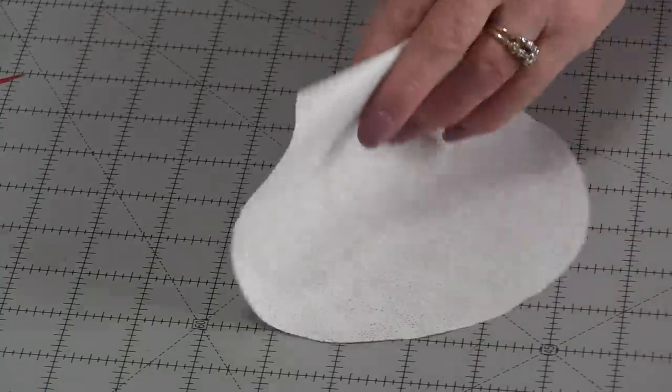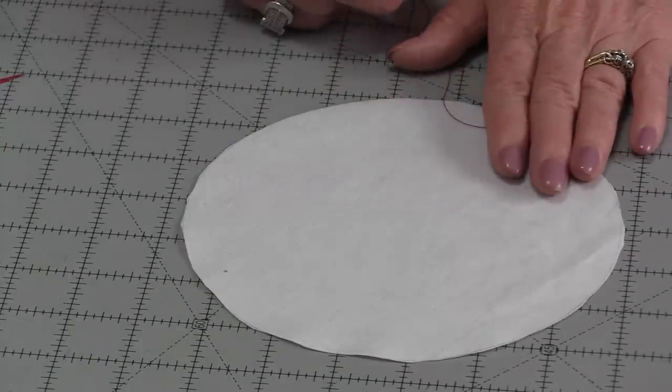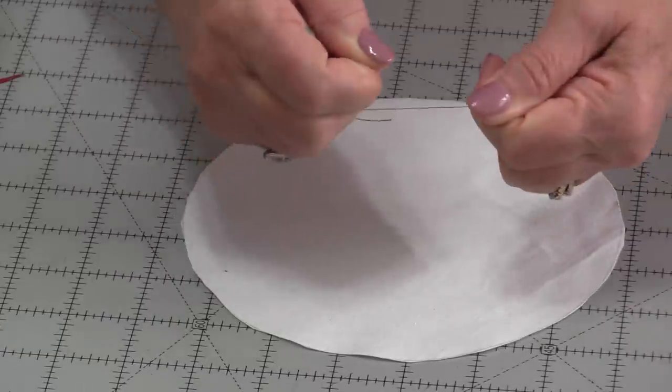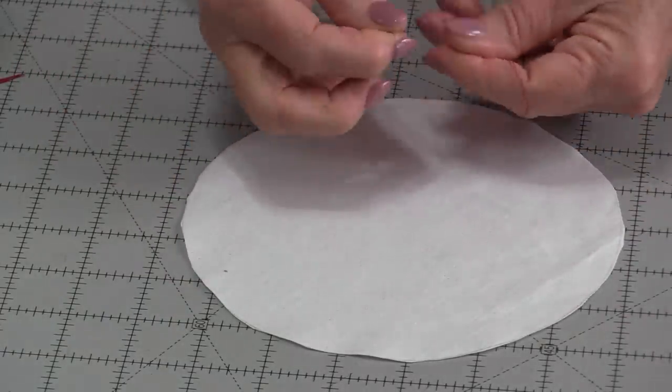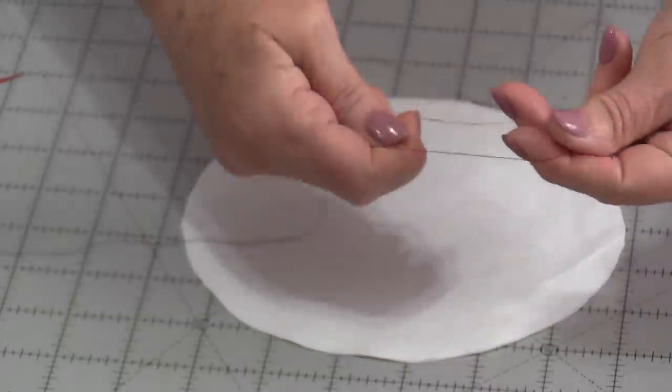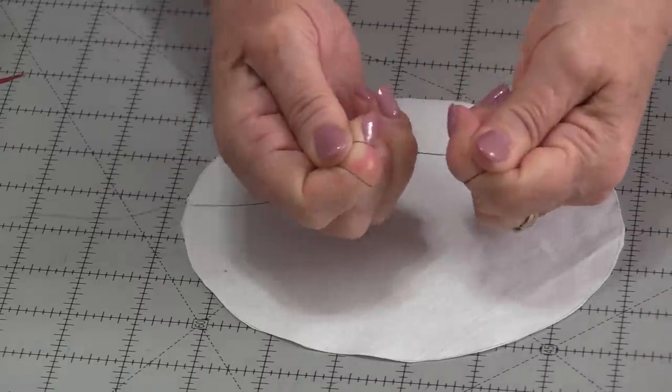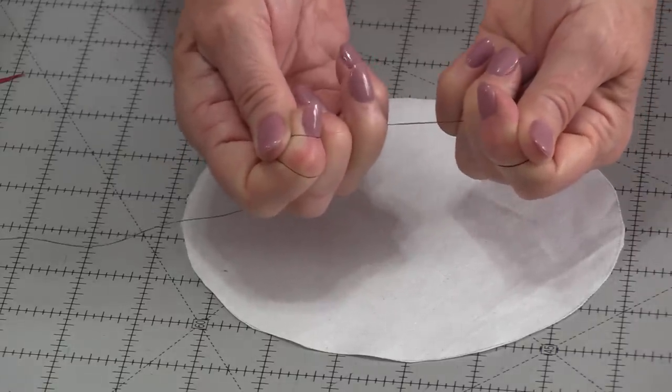We're going to stitch it from the wrong side. We're going to use thread that matches the fabric and is very strong. Some thread will break very easily, so we need a thread that is very strong. Test your thread by putting two layers together and pulling those two layers. If the thread won't snap, that will be a good thread to use.